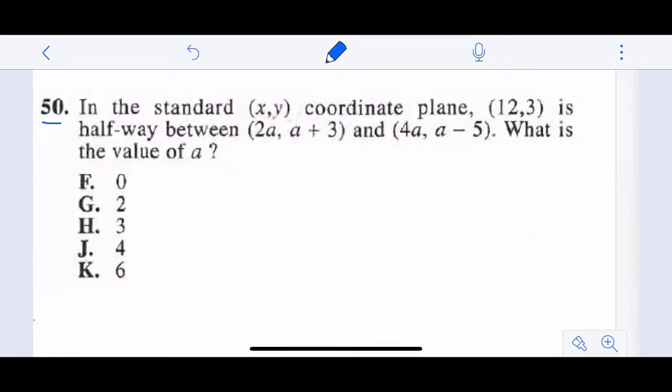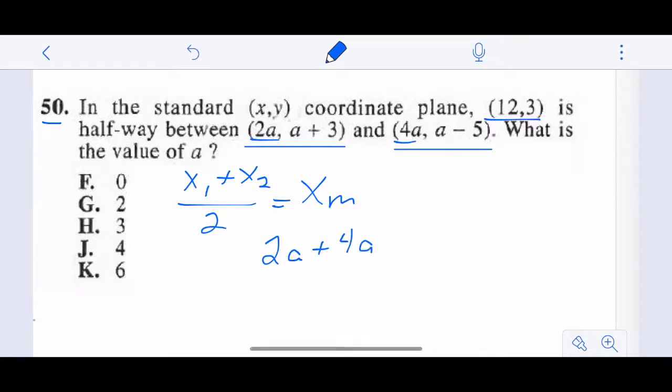If we know our midpoint formula, it's not. In the standard X, Y coordinate plane, 12, 3 is halfway between. The midpoint is between points 2A and A plus 3 and 4A and A minus 5. This becomes hard just because we're putting algebra into it. And so you've got to kind of figure it out. But it's still our midpoint formula. So we've got X1 plus X2 divided by 2 equals X midpoint. So we're going to go 2A with our X1. So 2A plus 4A divided by 2 equals 12, the midpoint of that.